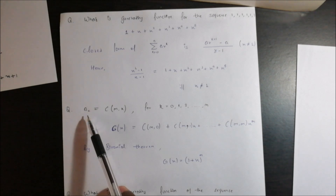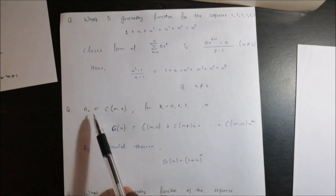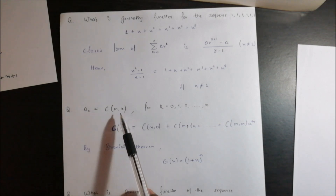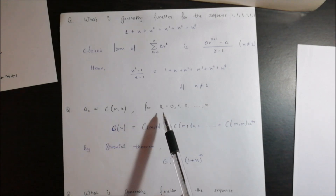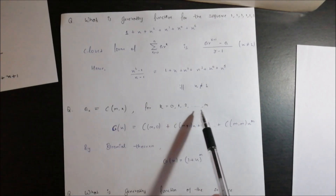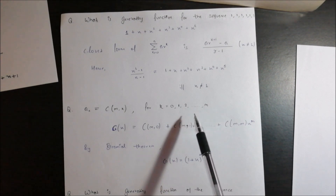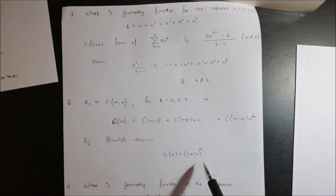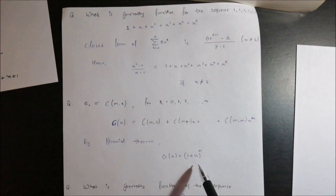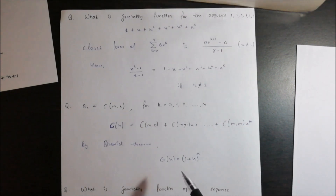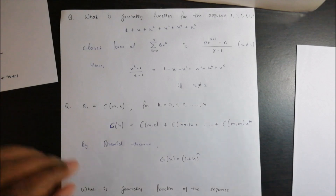So if any power series has coefficients a_k equal to C(m, k) for k equals 0 to m, then we simply apply the binomial theorem.